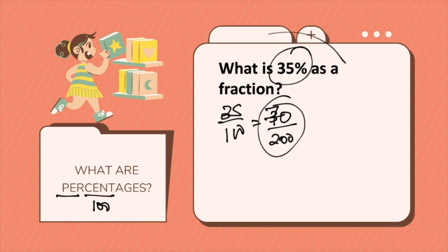So what is 35% as a fraction? 35% means 35 out of 100, or it can be simplified as 7 over 20.